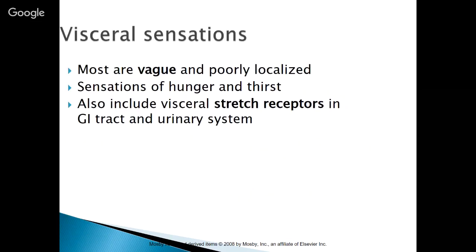Visceral sensations are most vague and poorly localized, so we don't know where they're really coming from. When you're an infant, you just cry — something feels weird, so you cry, and it's up to us to figure out what that sensation is. As you get older, you might say something like 'my tummy hurts,' and that may actually be a sensation of hunger, but your brain just says 'my tummy hurts.' Thirst is also a visceral sensation. These also include stretch receptors within the GI tract and the urinary system, so you know when you have to go to the bathroom — that's part of your visceral sensations.